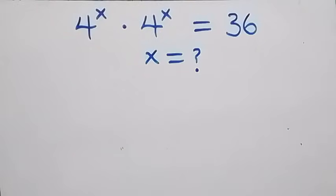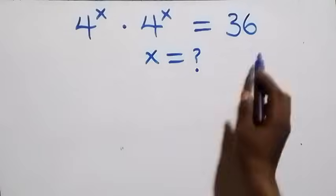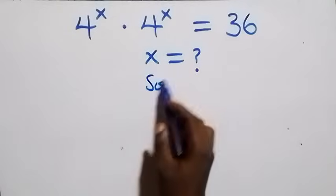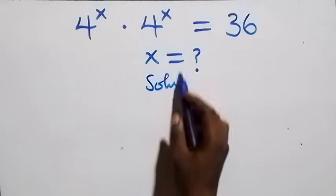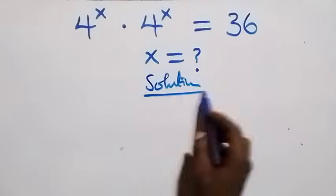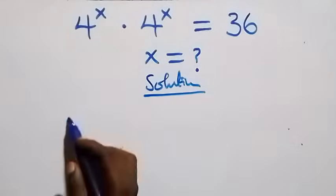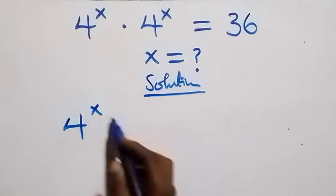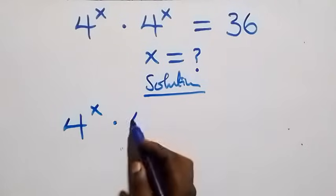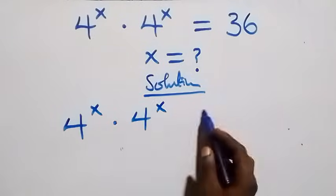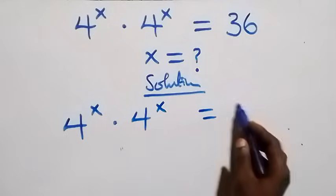Hello, welcome. Here's how to solve this nice exponential equation. What we have is 4 raised to power x times 4 raised to power x equals 36.